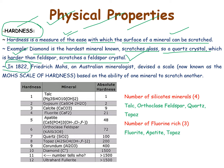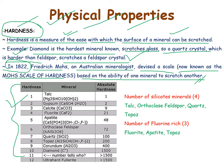In 1822, Frederick Mohs, an Austrian mineralogist, devised a scale known as the Mohs scale of hardness, based on the ability of one mineral to scratch another. The sequence of hardness is as follows: 1) talc, 2) gypsum, 3) calcite, 4) fluorite, 5) apatite, 6) orthoclase, 7) quartz, 8) topaz, 9) corundum, and 10) diamond. You should remember this for the exam, as this is the actual Mohs scale of hardness.